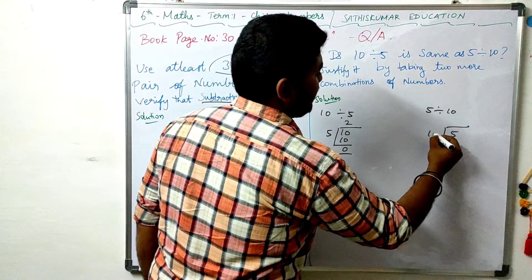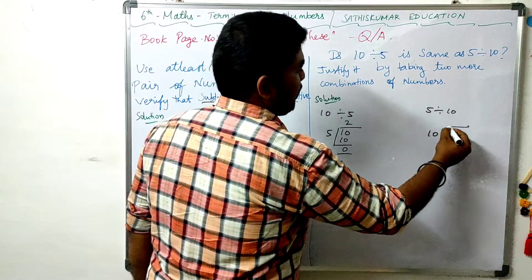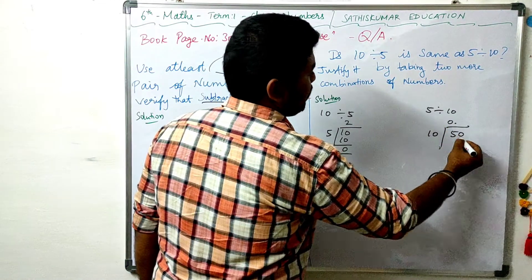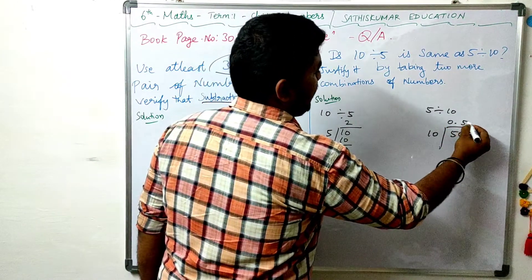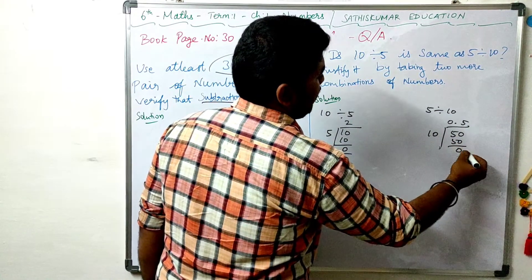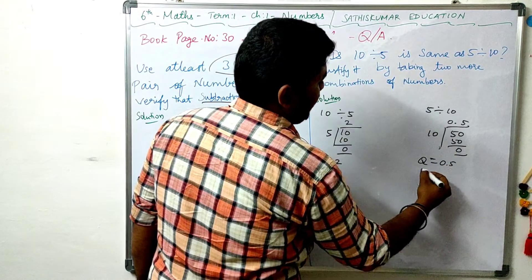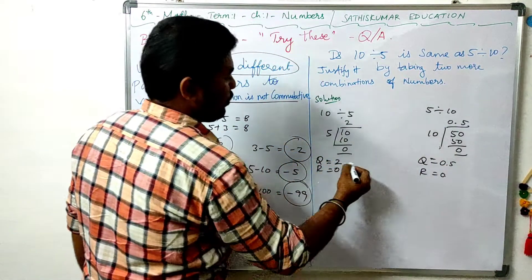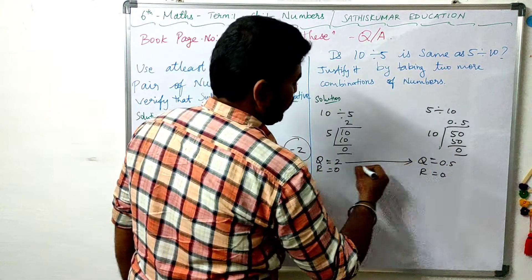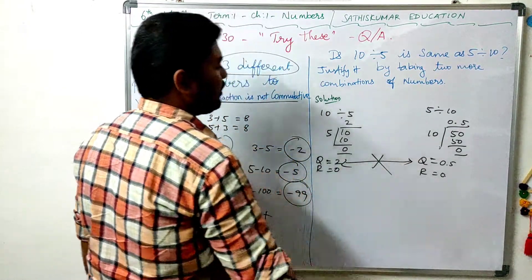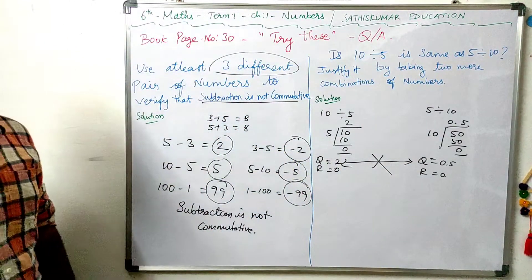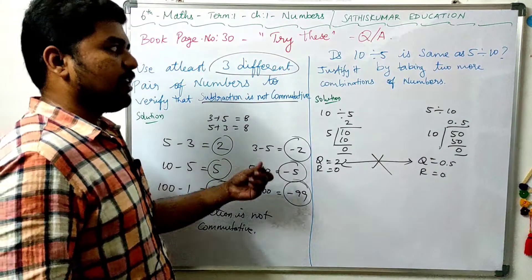This is 5 divided by 10. Divide 5 and divisor is 10. 5 tens are 50, remainder 0. Here quotient 0.5 and remainder 0. So 2 and 0.5 is not the same. So division is not commutative.